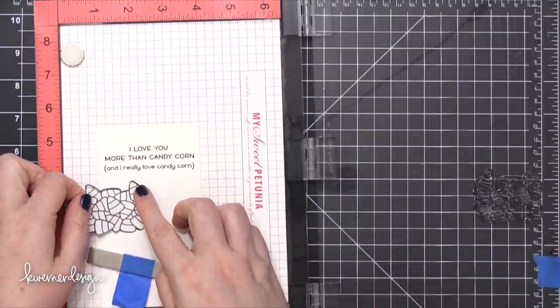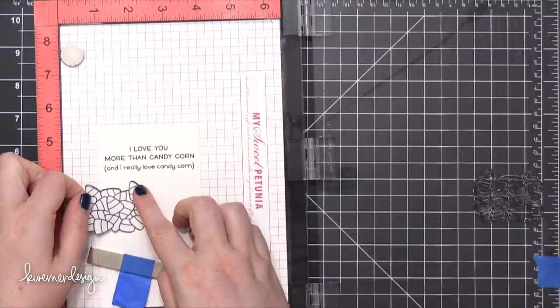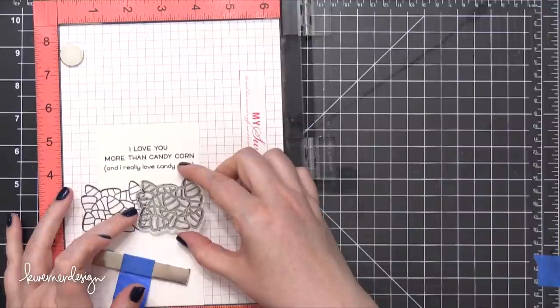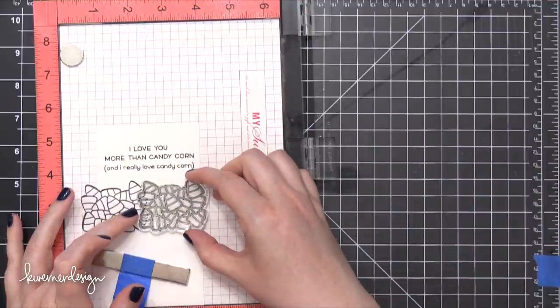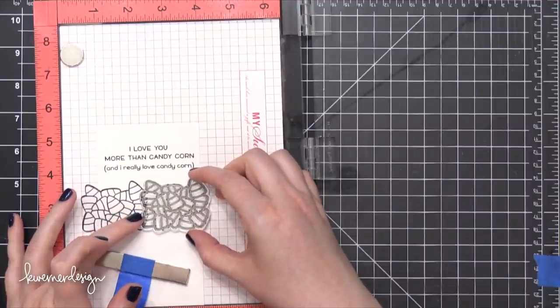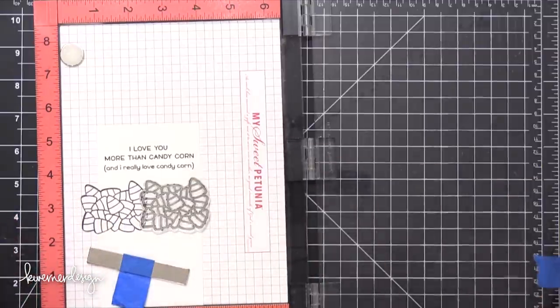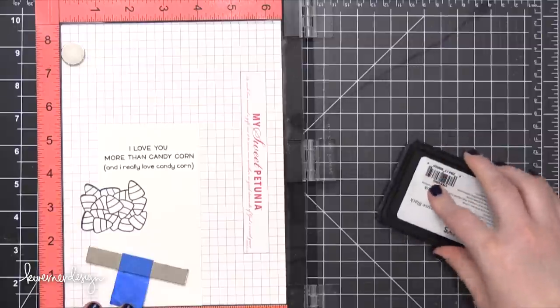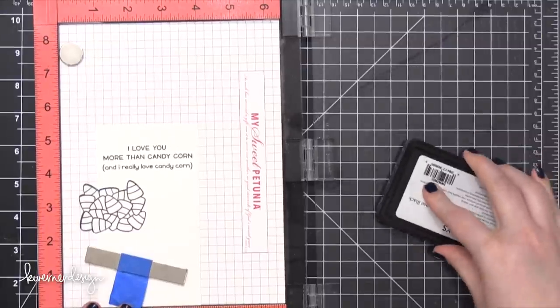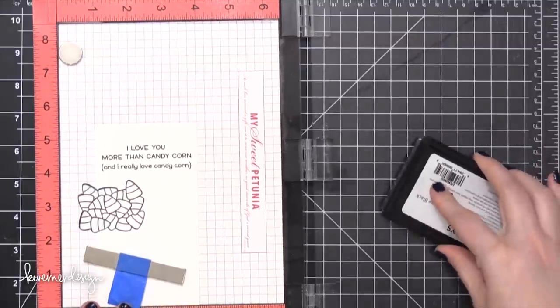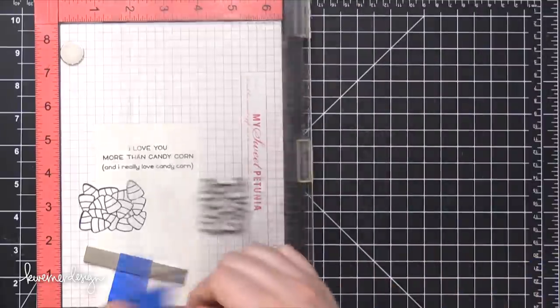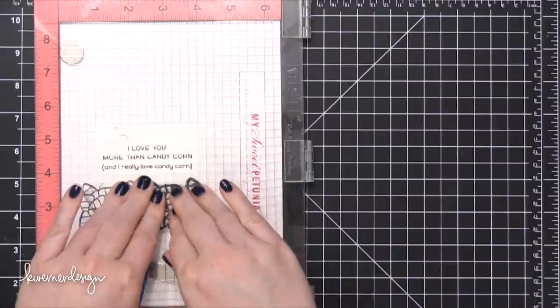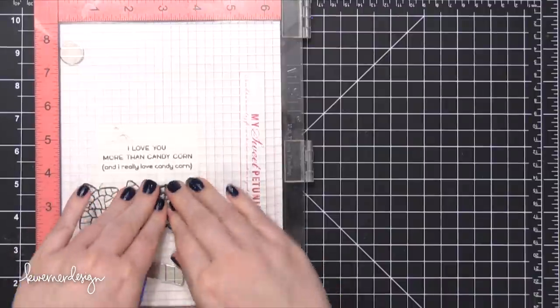So I'm going to go ahead and cover this first stamping with my mask and that's going to protect the edges that are around the outer edges of this cluster while I stamp another cluster of candy corn right next to it. So I'm going to place that right there and I'm going to go ahead and stamp again.